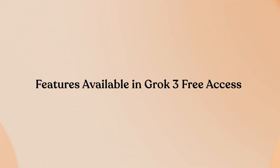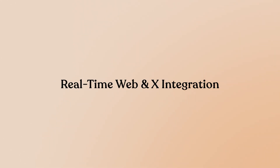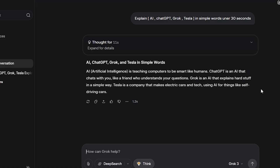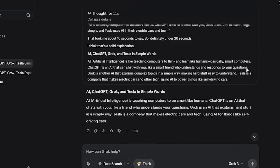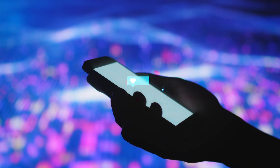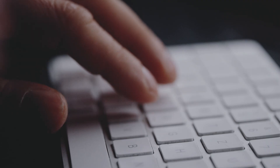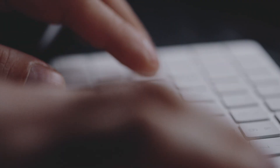Features available in Grok 3 — free access, real-time web and X integration. Grok 3 accesses current internet information and X posts, pulling in news, trending topics, and recent social media content. Filter toggles let you choose web search, X posts, X media, or trending data. This real-time capability is available to all users.